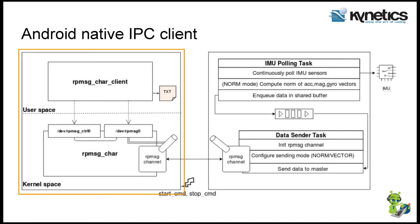On the Android side we have two components: in the kernel, the RPMsg character driver divided into the control device and the actual RPMsg character device. The control device (rpmsg_ctrl0) is used to trigger endpoint creation via an IOCTL call, and the RPMsg character device is opened by the application to gather data.